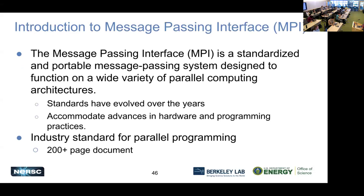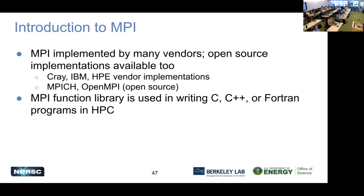The Message Passing Interface, MPI, is a standardized and portable message passing system designed to function on a wide variety of parallel computing architectures. So it is a standard — that's what MPI is. It has evolved over the years to accommodate advances in hardware and programming practices. And it is a long document that you can read for your reading pleasure, especially if you are experiencing insomnia. The MPI standard is implemented into libraries by many vendors, and there are open source implementations too.